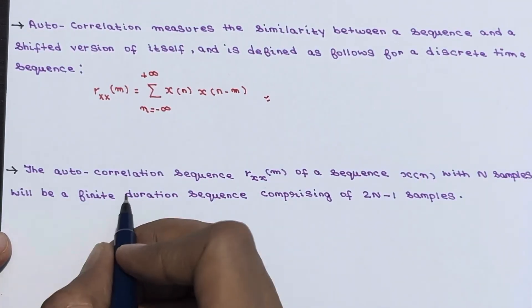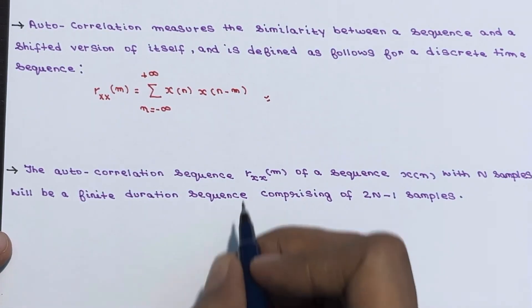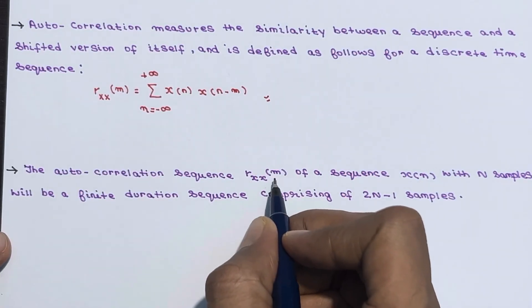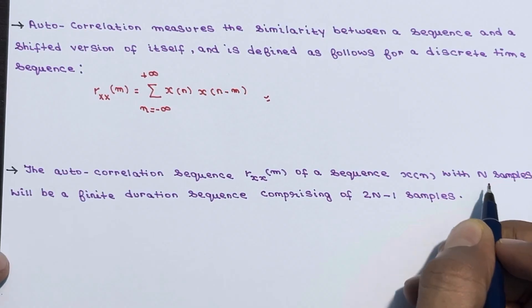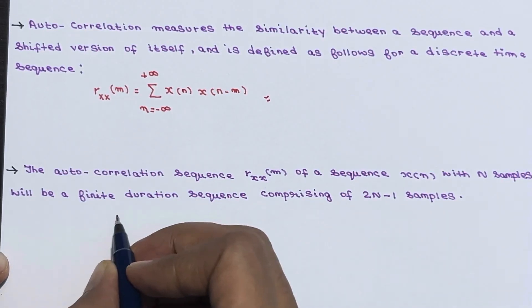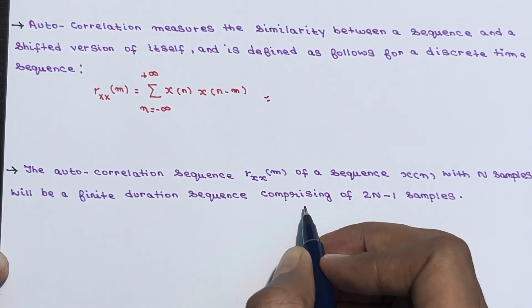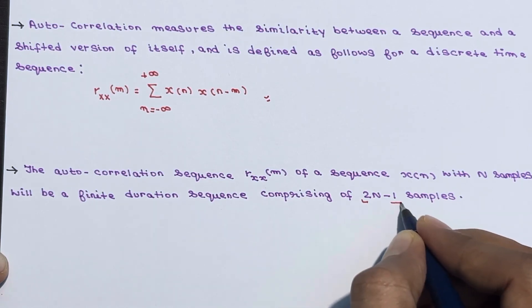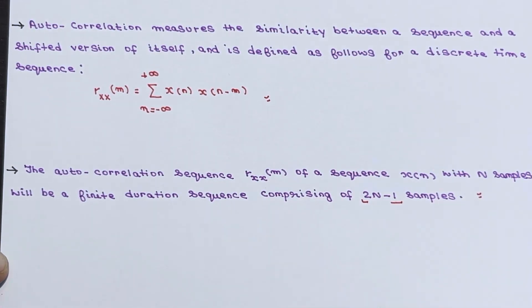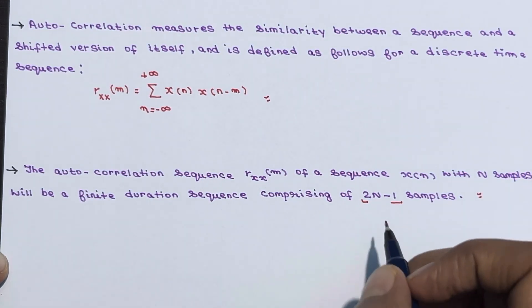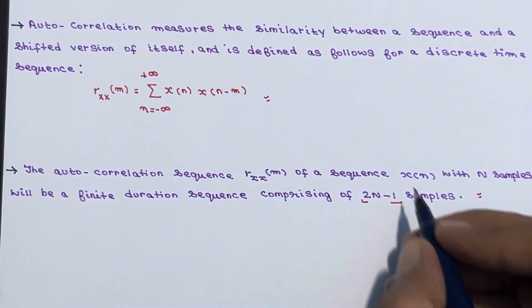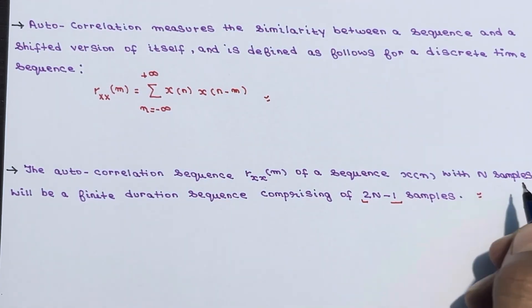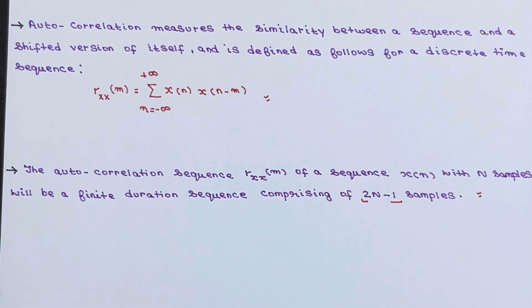So the auto-correlation sequence rxx of m of a sequence x of n with n samples will be a finite duration sequence comprising of 2n minus 1 samples. So in the final result the samples will be 2n minus 1 if x of n has n samples. So this is about auto-correlation.